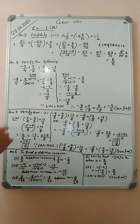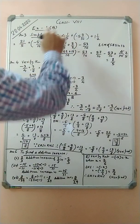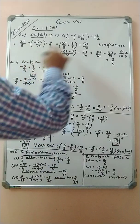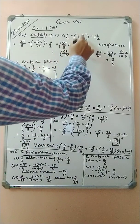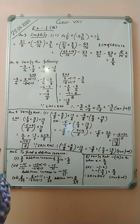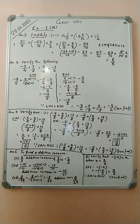Converting to improper fractions: 4 and 1/5 becomes 21/5. For minus 5 and 3/10, we get minus 53/10 inside brackets. And 1 and 1/2 becomes 3/2.